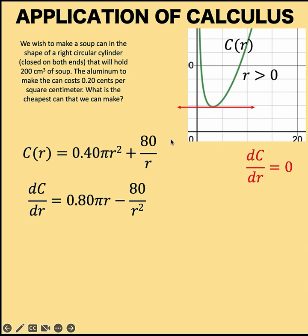Let's find the derivative of the cost function with respect to the variable r. That equals the derivative of the first term plus the derivative of the second term. The derivative of 0.40πr² equals 2 times 0.40 times π, which is 0.80π. And we subtract 1 from the exponent of r² to get r.